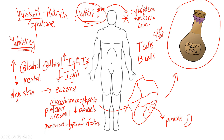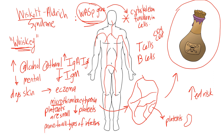Looking at the anatomical position patient, immunoglobulins are affected all over the body. One important additional point: this disease carries an increased risk of lymphomas, which would be a systemic problem. Eczema can happen anywhere on the skin. Microthrombocytopenia would manifest all over — internal bleeding anywhere in the body, bleeding more from cuts. Susceptibility to infections could affect various parts of the body depending on the pathogen involved.